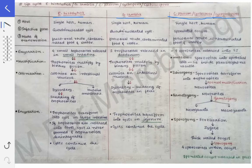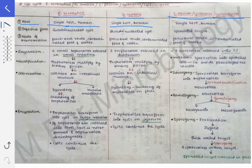Coming to the features, the first point is about the host. For Entamoeba histolytica, it is a single host and the host is human. In case of Giardia lamblia, it is a single host and again it is human. In case of these coccidian parasites, again it is single host and it is human.